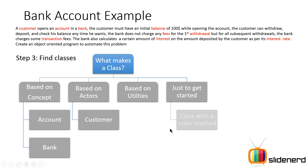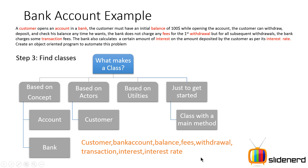The easier one to identify is 'customer' — any person or people involved with your application directly become classes in most cases. So we have three classes: Customer, Account, and Bank — plus a separate class for the main method, making four total. Notice that all these classes are nouns. If you ask why 'balance' isn't a class — balance itself is a property. You can't think of sub-properties for it, whereas an account has balance, you can deposit into it, withdraw from it. That's how you distinguish a class from a property.